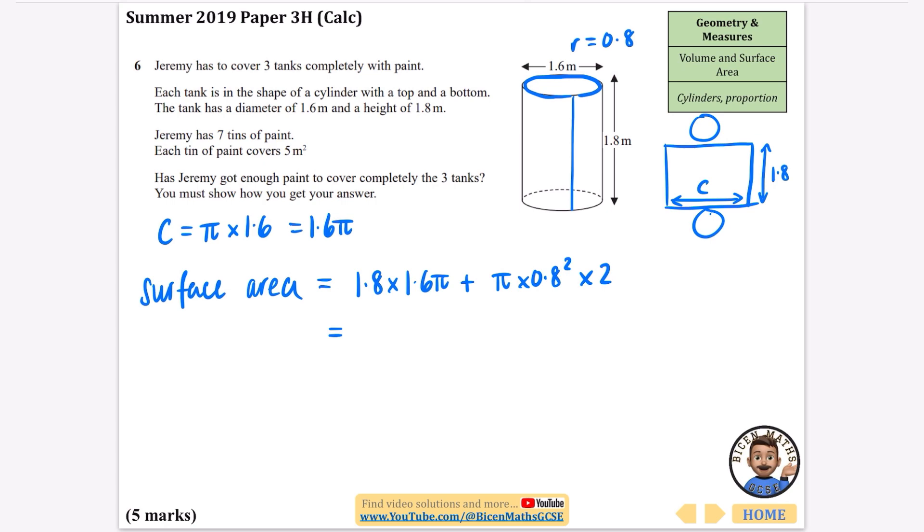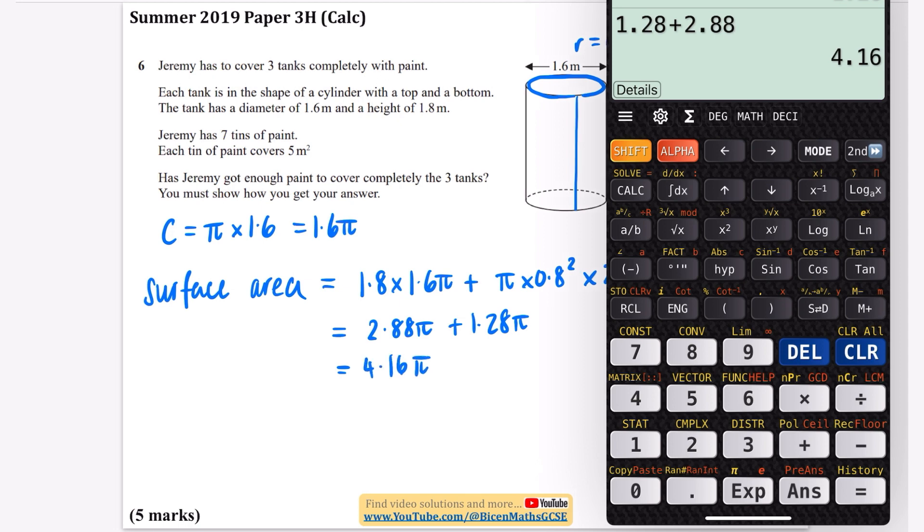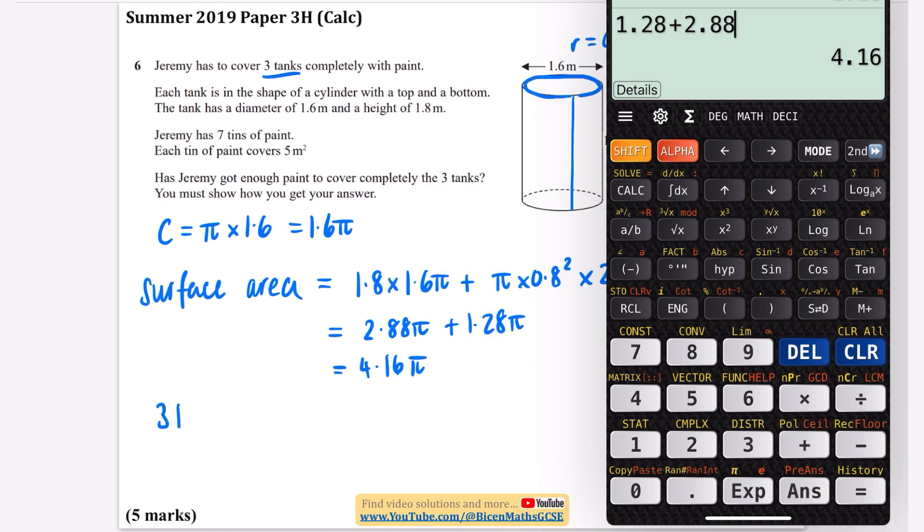I'm going to calculate 1.8 × 1.6, which is 2.88π. Then 2 × 0.8² is 1.28π. If I add 1.28 and 2.88, I get 4.16π. This is the surface area of one tank. Jeremy has to cover three tanks, so three tanks is 4.16π × 3.